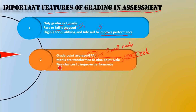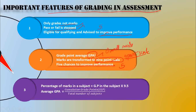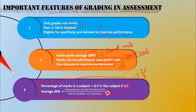Marks are transferred like that, and the child is given 5 chances to improve performance. This is important — the percentage of marks in a subject equals the grade point in the subject multiplied by 9.5. That is the formula. The average grade point — cumulative grade points divided by total number of subjects — gives you the average GPA.